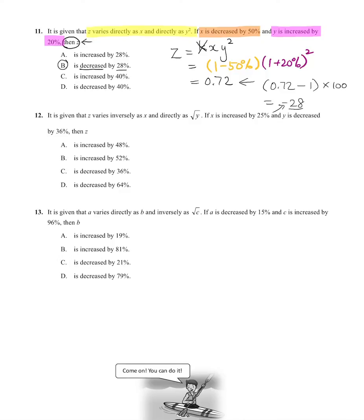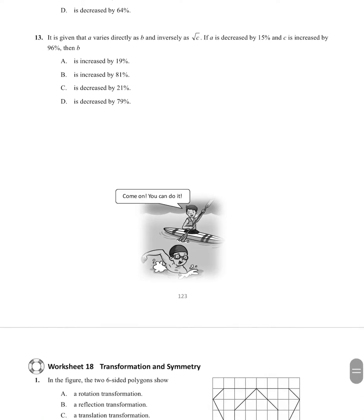Let's do one more - the last one, question 13. Write down the equation first. So A varies directly as B, inversely as square root C. Again, because K is a constant we just ignore that.